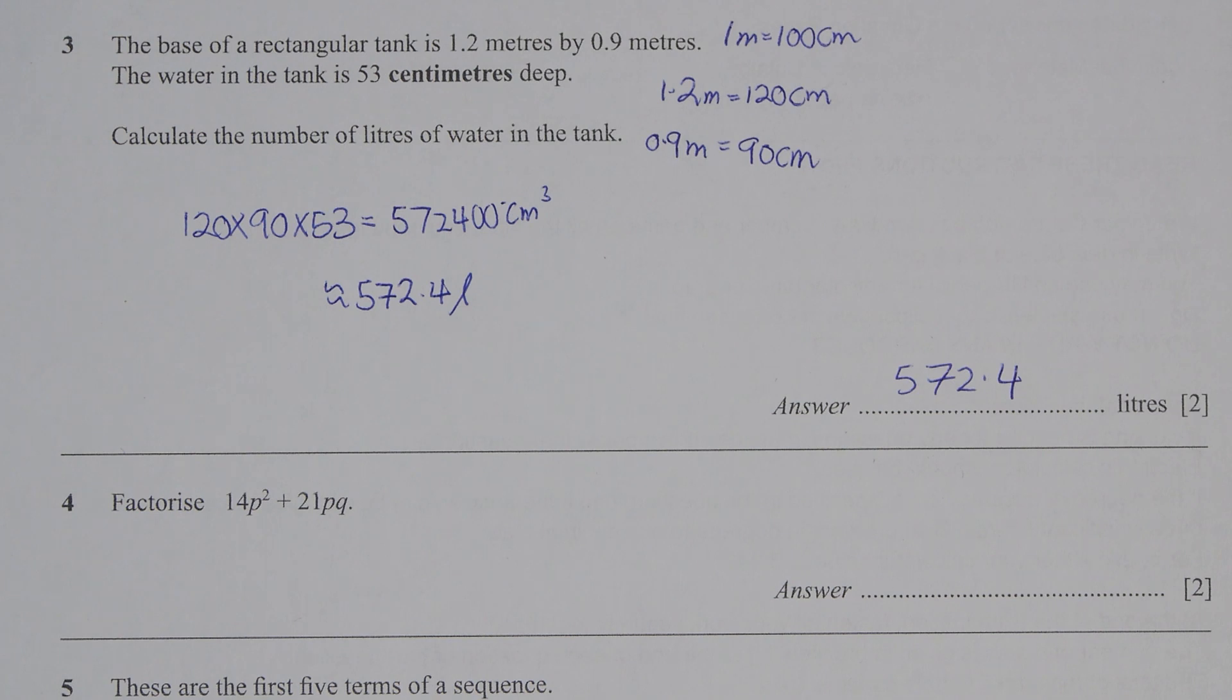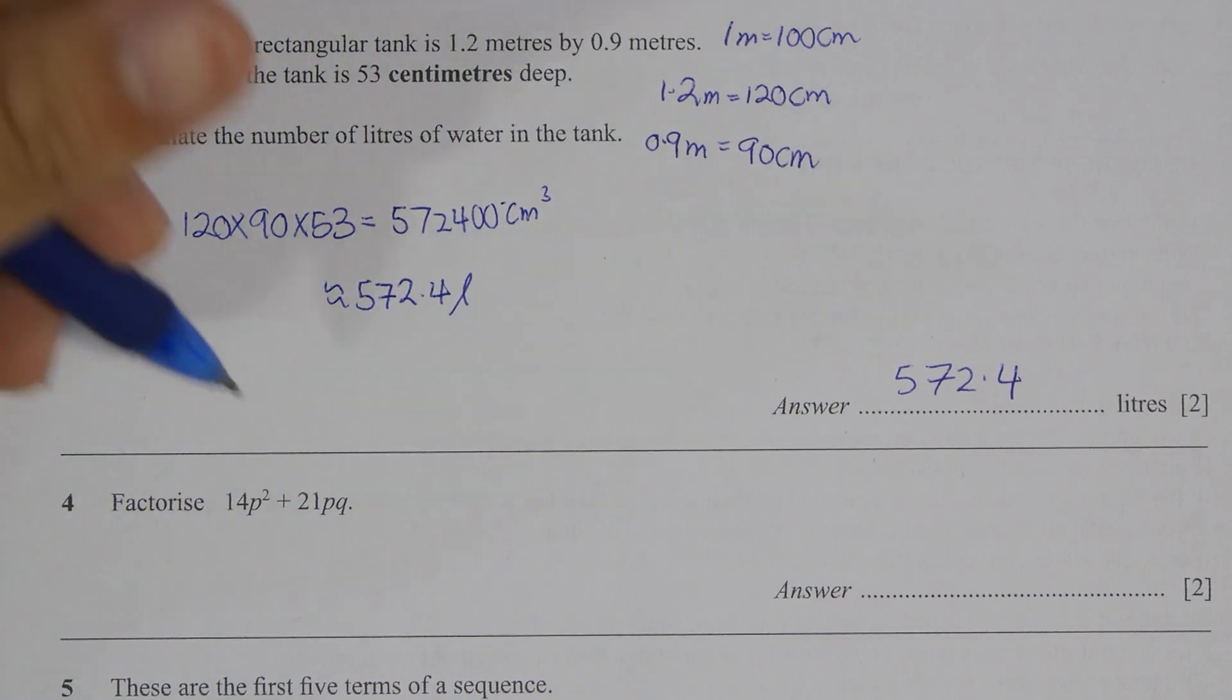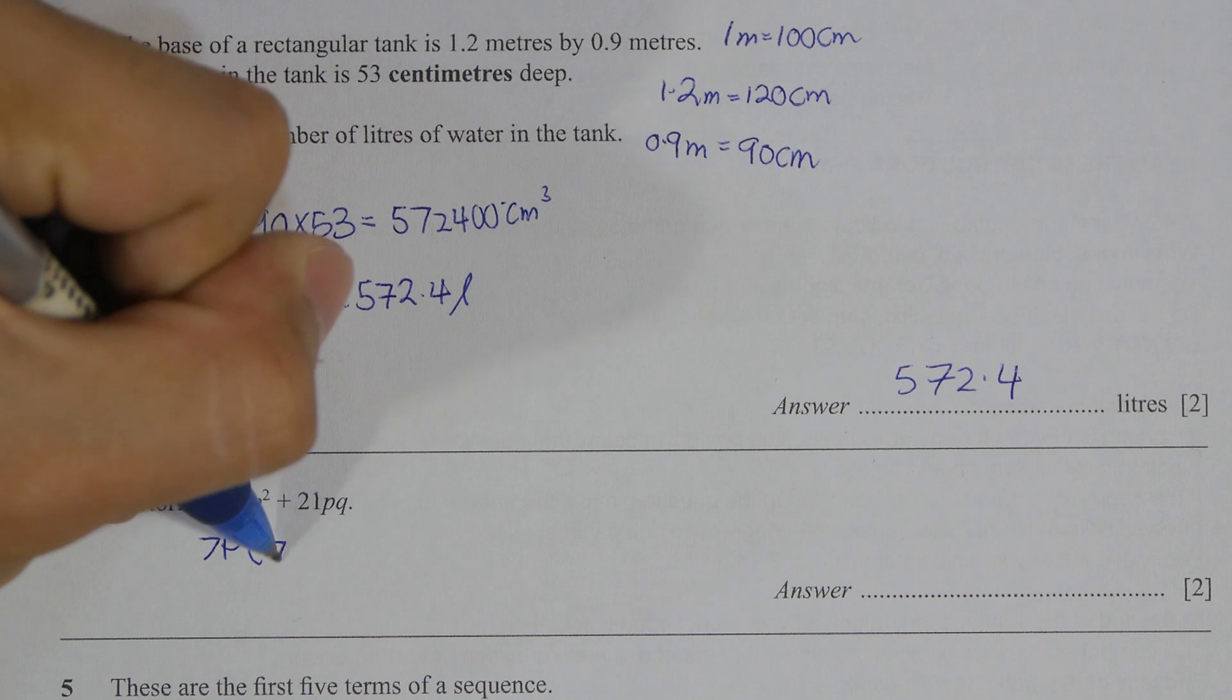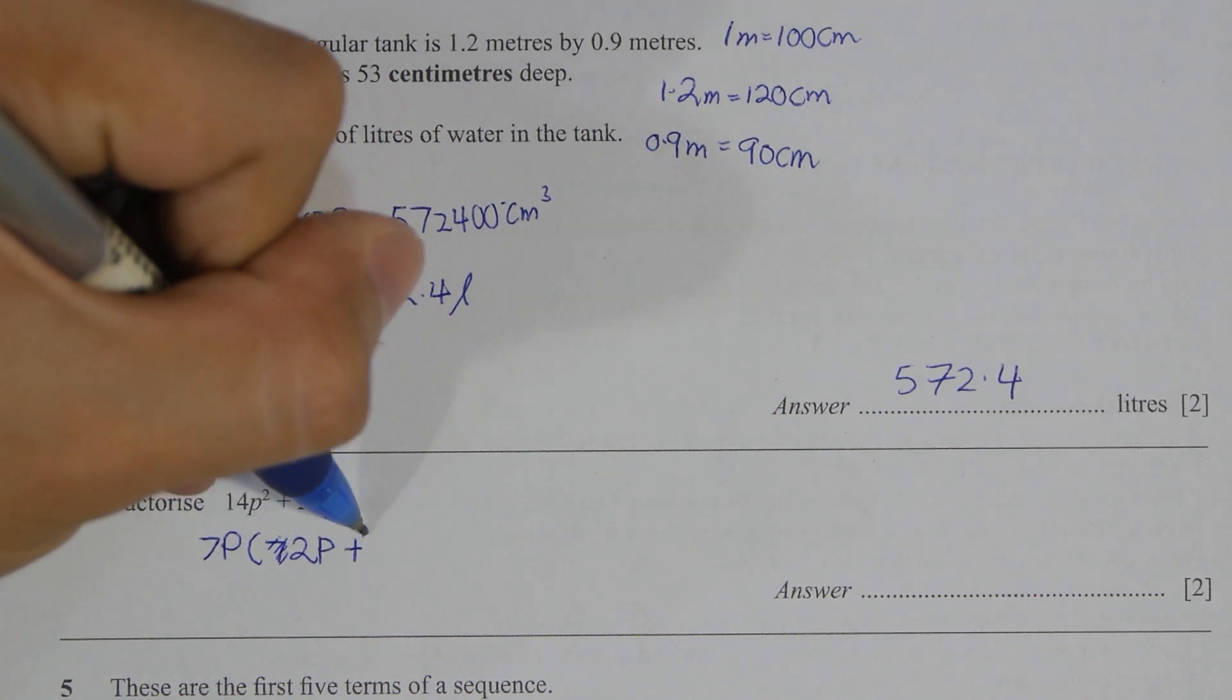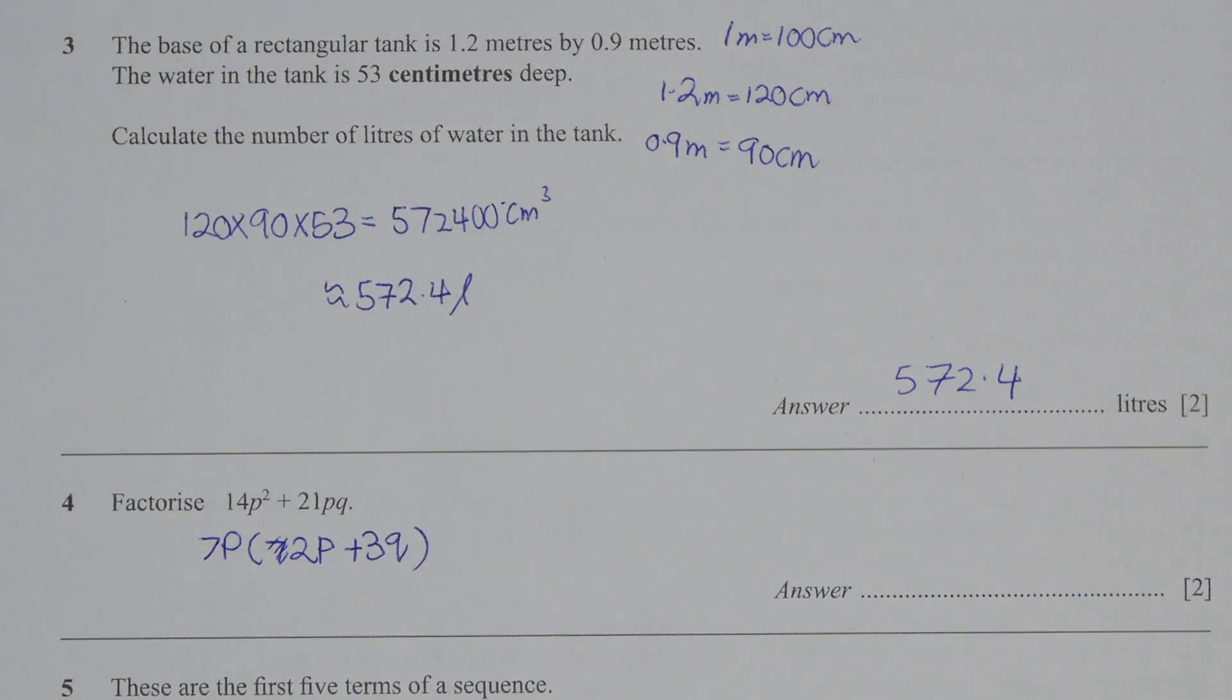For question four, their common factor here is actually 7 and P. So after you extract 7P from both variables, you will be left with 2P plus 3Q.